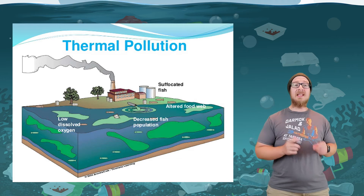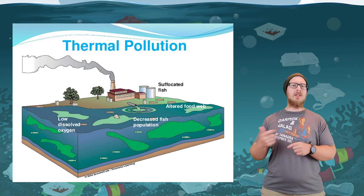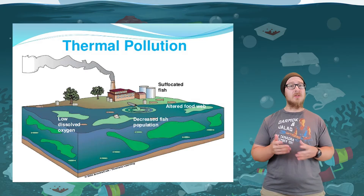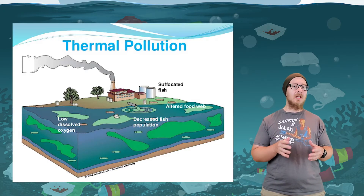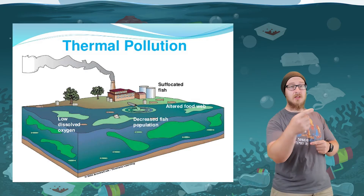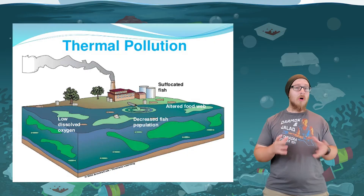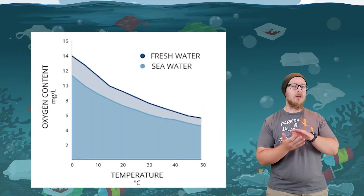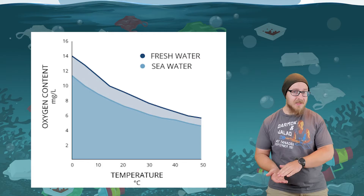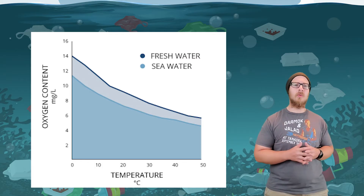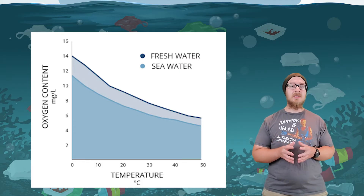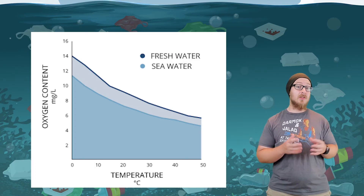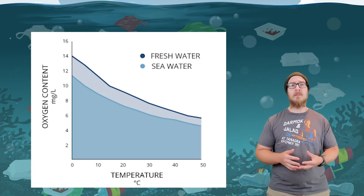Thermal pollution occurs when heat is released into the water. This is very common near power plants, where water from rivers and lakes is used for cooling and then discharged back. Warmer water temperatures are an issue because warmer water has a lower capacity to hold oxygen than colder water. Areas experiencing thermal pollution have lower dissolved oxygen concentrations, resulting in decreased fish populations.